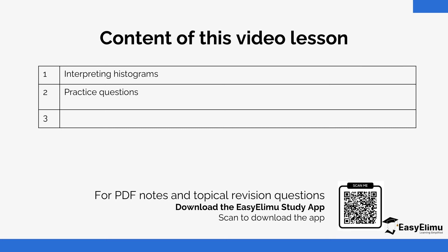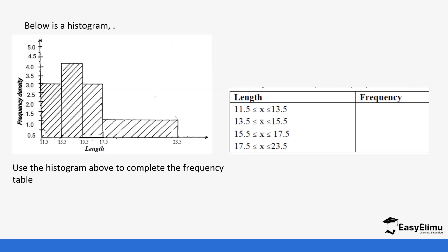For histograms with equal class intervals the procedure is the same — the only difference is we do not use frequency density. So let's look at a few questions. You'll notice this histogram has an unequal class interval, and on the y-axis we used frequency density, not just frequency. Keep that in mind especially if you're looking for frequency. We use the histogram above to complete the frequency table — we get the frequency density.